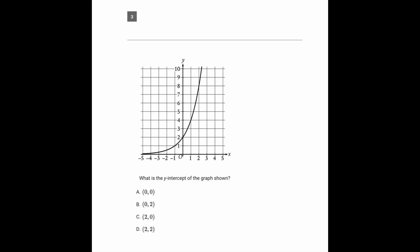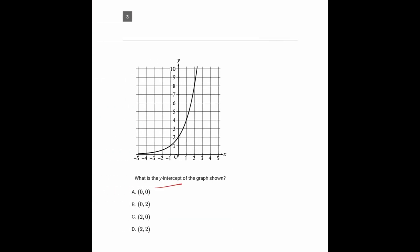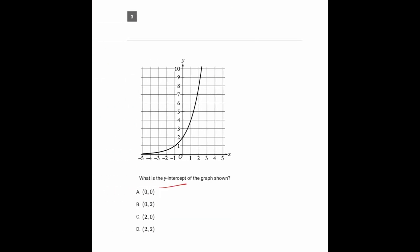Now going to question number three. Here we're being asked for the y-intercept. In general, the y-intercept is where x is zero. So here we need to know where x is equal to zero. When x is equal to zero it puts you on this axis, and all the points on this green line they all have x values of zero.